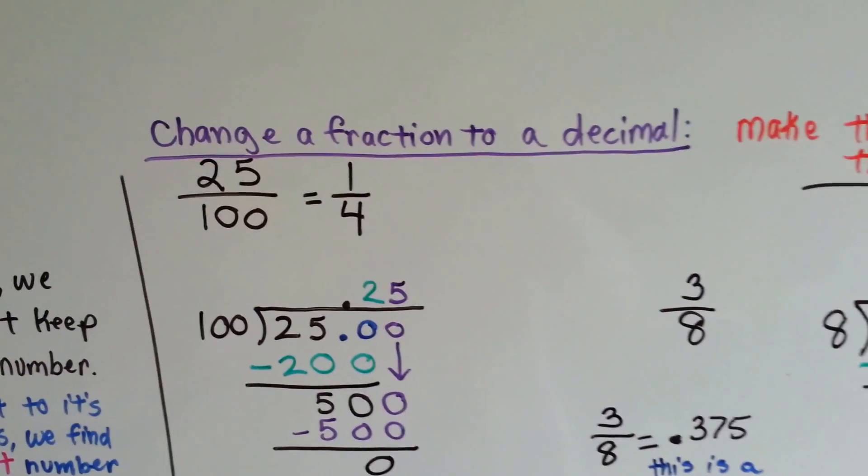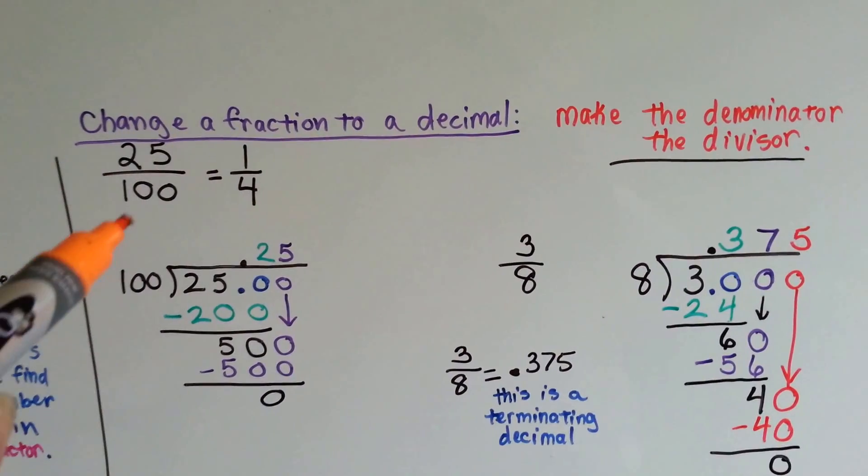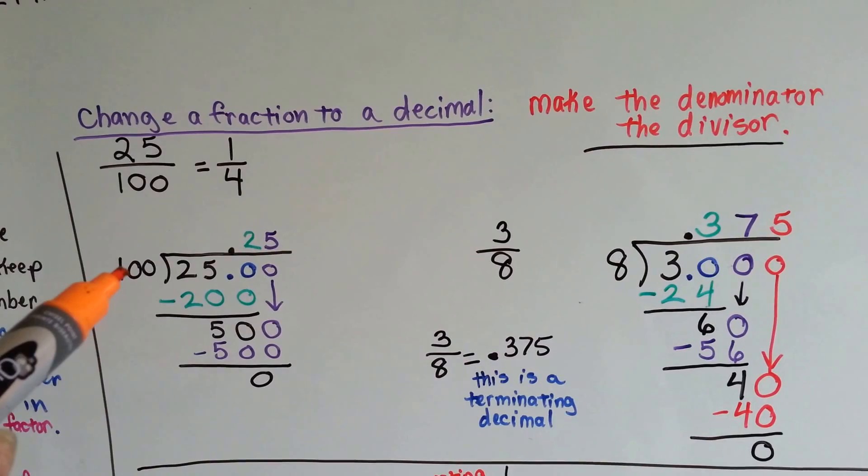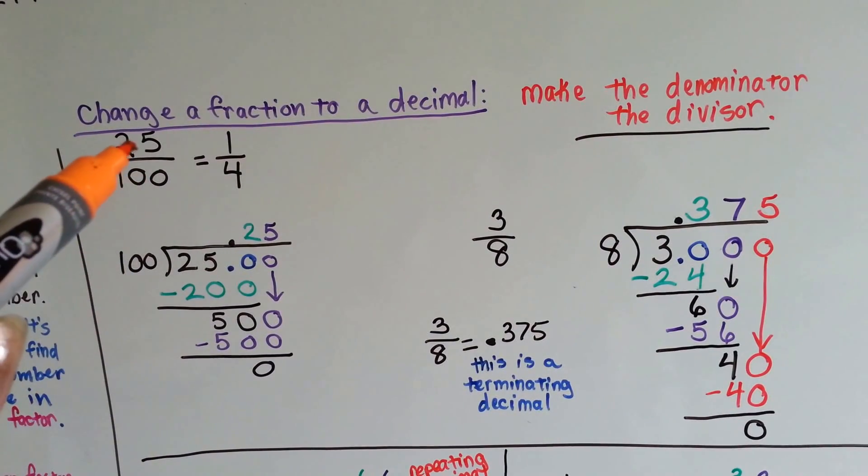We can change that fraction to a decimal. And I'll use the twenty-five hundredths as our example. What we do is we use the denominator as the divisor, and we put this big, huge denominator into that little numerator. We could even do it with the four and the one.